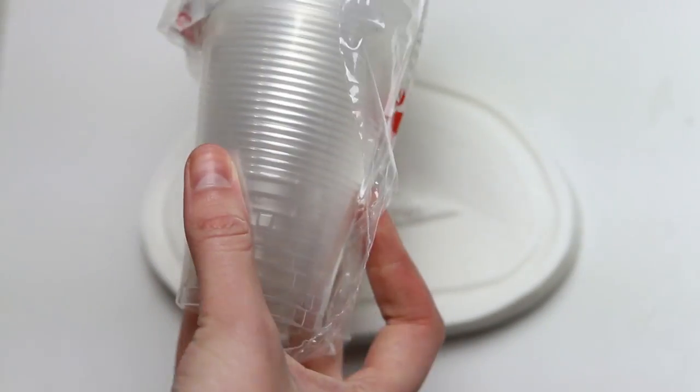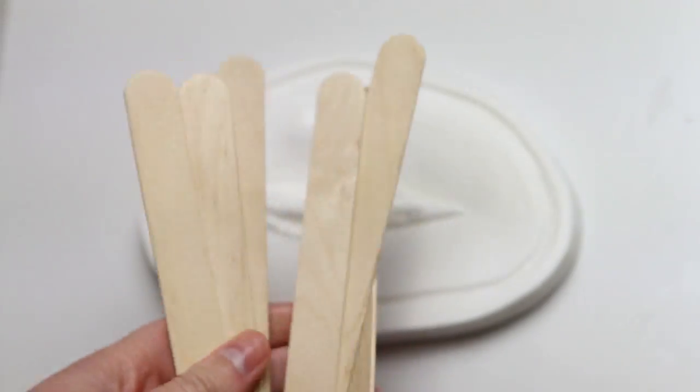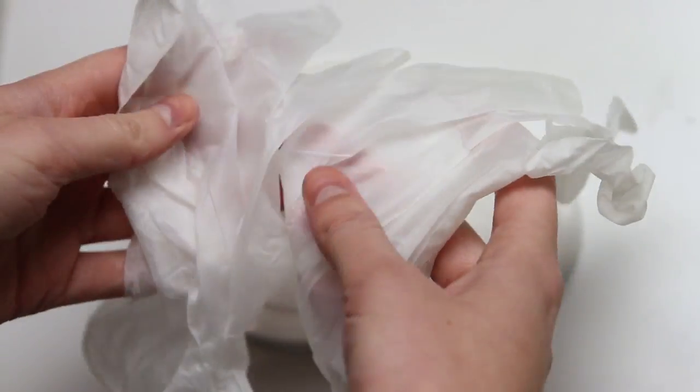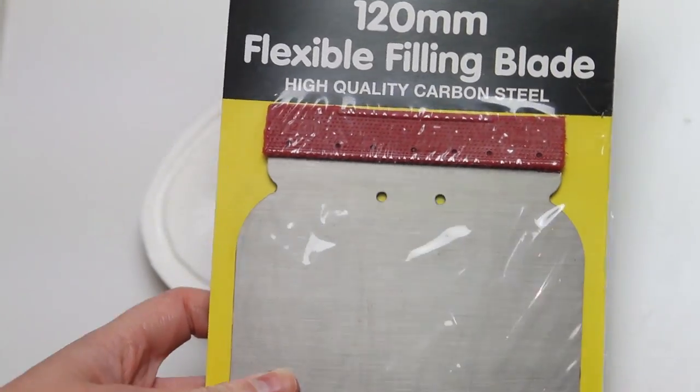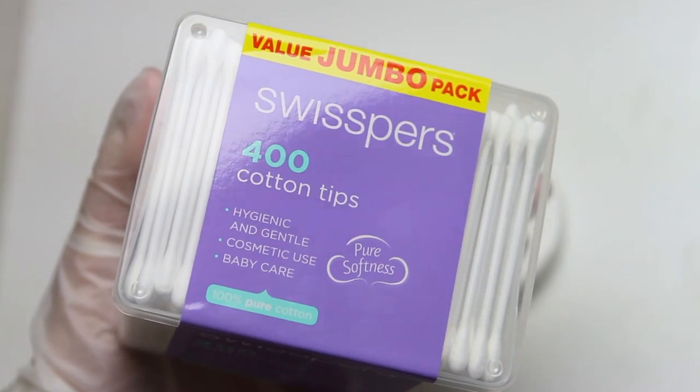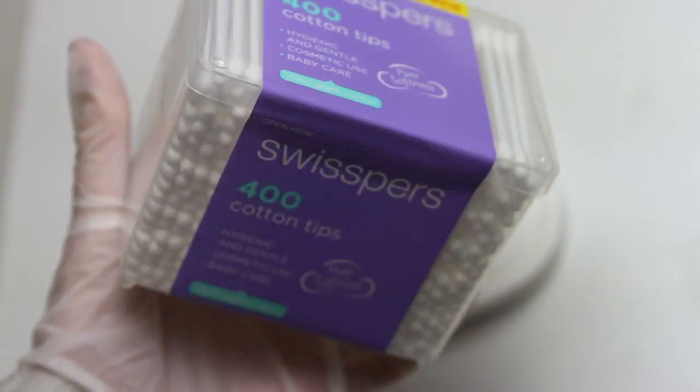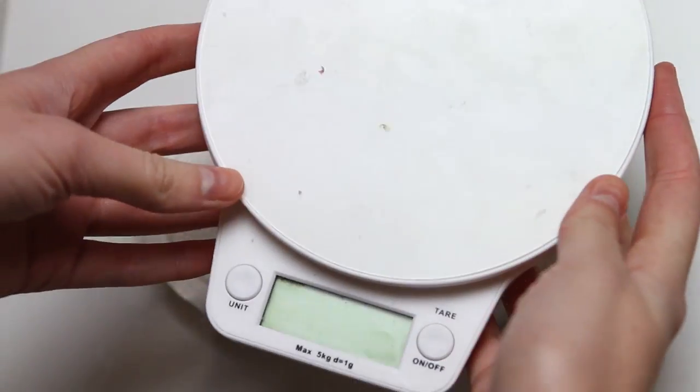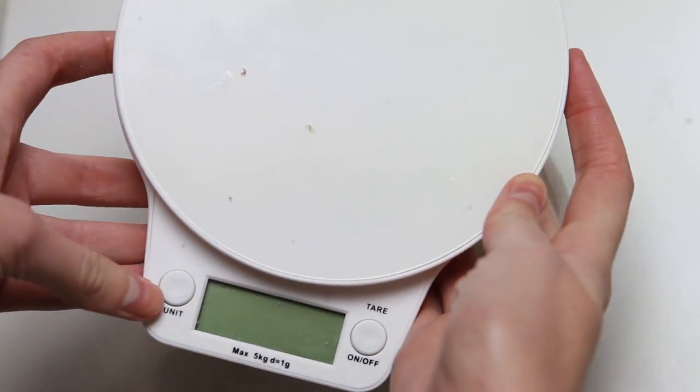You'll also need disposable cups, tongue depressors, non-latex gloves, a metal filling blade or something to scrape with, cotton tips, Q-tips, whatever you call them, and a digital scale.